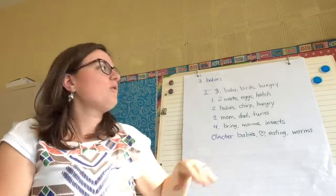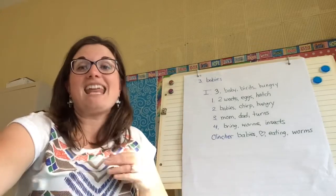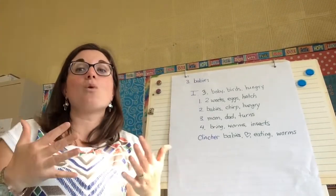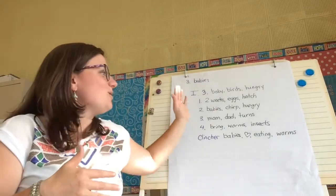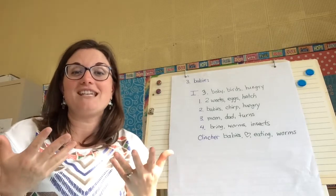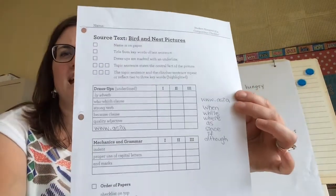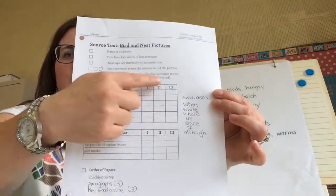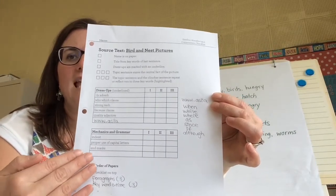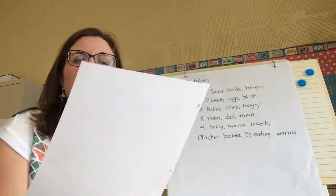We're going to take our keyword outline — yours could look a little bit different than mine and that is fine — and you're going to turn them into sentences. Remember this is your story, so you can go off your keyword outline and add your details and names and things you'd like. You should have a checklist with paragraphs one and two all completed — all your dress-ups, your indent, your capitals, and your end marks — and now we're going to work on the third paragraph.